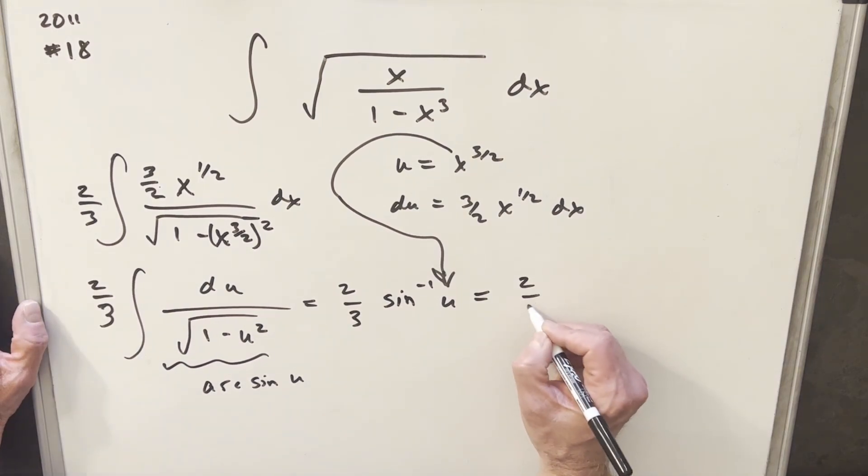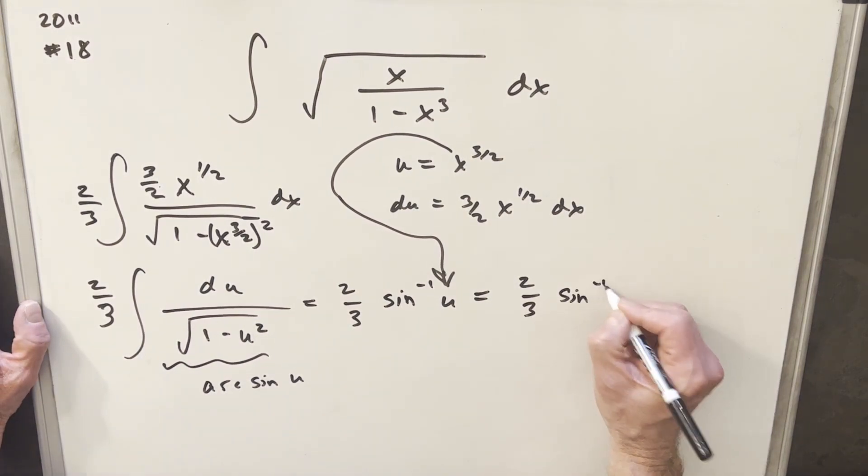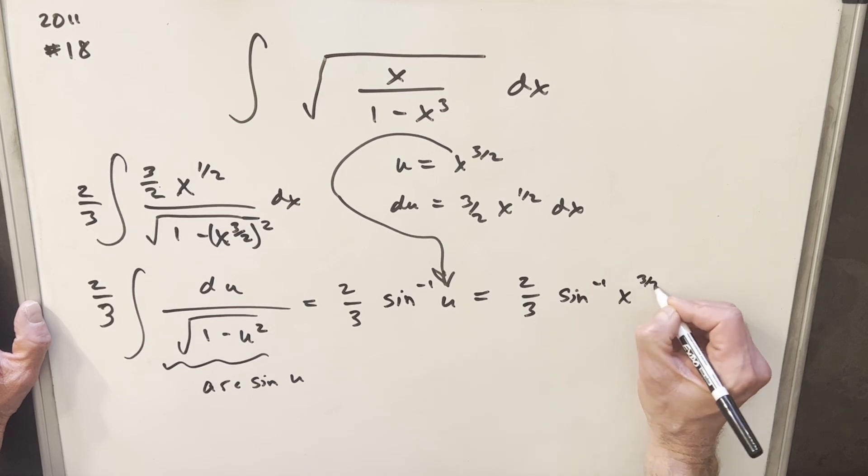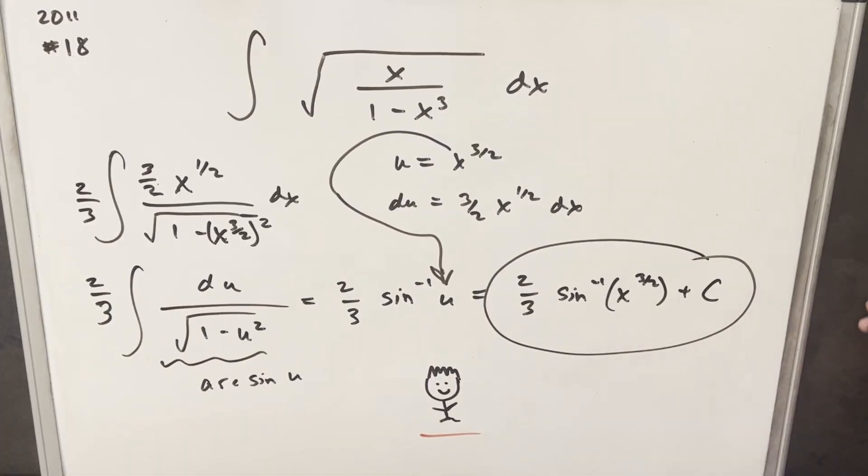So for our answer, we're going to have just two-thirds inverse sine x three-halves plus c. Thanks for watching. Have a great day.